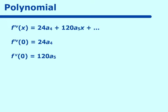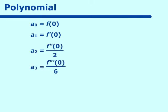What does a sub zero equal? We found out that a sub zero equals f of zero and a sub one equals f prime of zero. And a sub two is going to equal f double prime of zero over two. And a sub three equals f triple prime of zero over six. And a sub four equals f to the fourth prime of zero over 24.